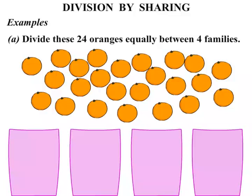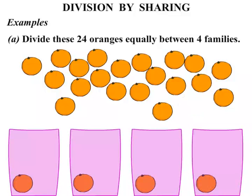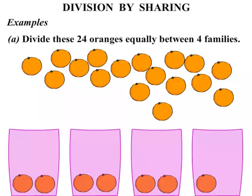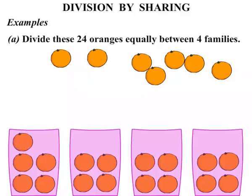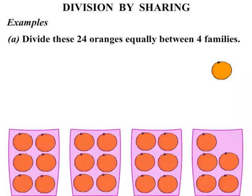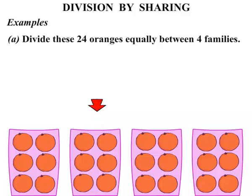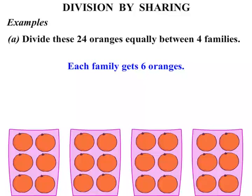Now we're going to move 1 orange at a time, distributing all 24 oranges across the 4 containers. So the 24 oranges have been split up. In the first container we can see there's 6. There's 6 oranges in the next. The next one also has 6 oranges. And finally the 4th one has 6 oranges as well. So we can say that each family gets 6 oranges.